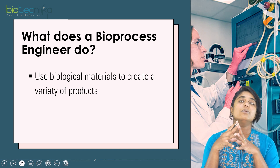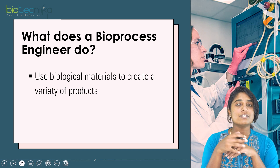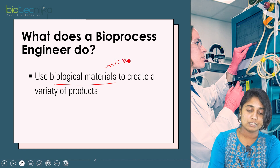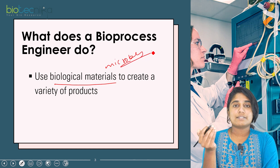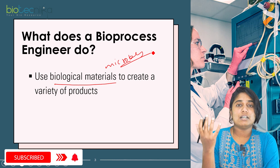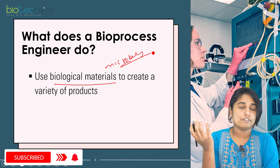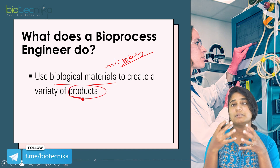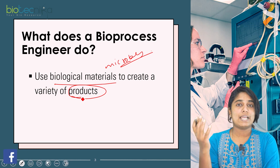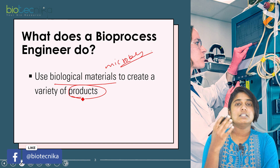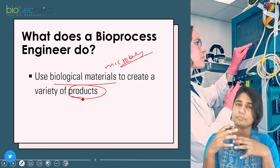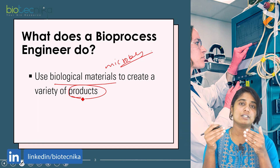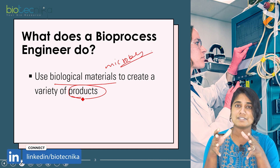What bioprocess engineering is: it uses biological materials to create a variety of products. For example, we use microbes to create biological products such as ethanol or any active pharmaceutical ingredient in a drug. What you do is take the microbe, put it in a bioreactor, add the substrates, and the process starts with multiple factors. You then get the product, take it out, and further process it. This is what bioprocess engineering is in a very crisp form.